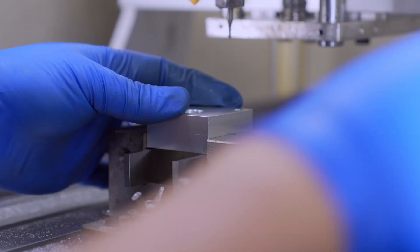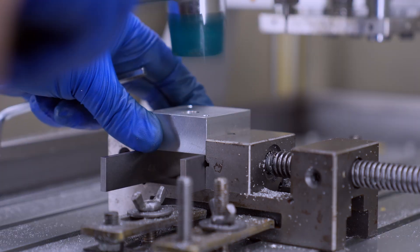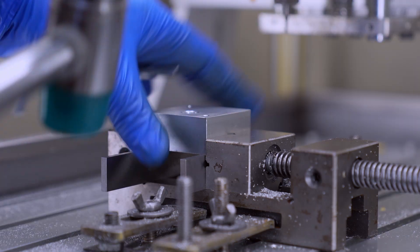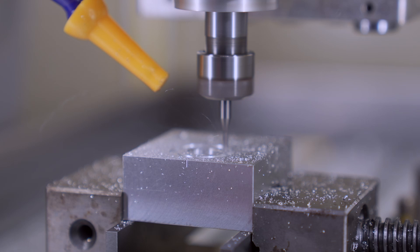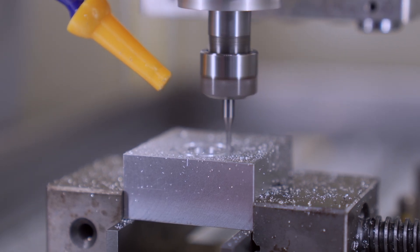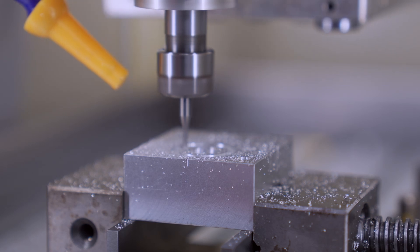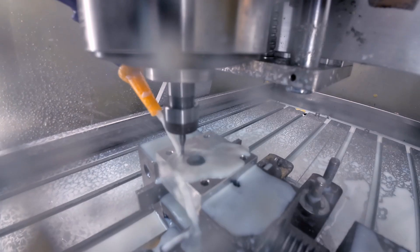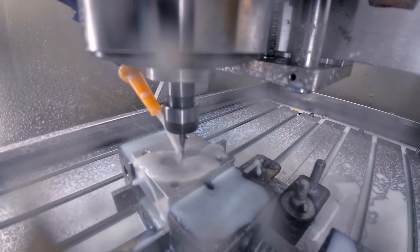The second step is to machine the circular groove on the other end face. I used a CNC router for this process. At first, for a better video shot, I didn't use any cutting fluid, but later, for safety, I turned it on.